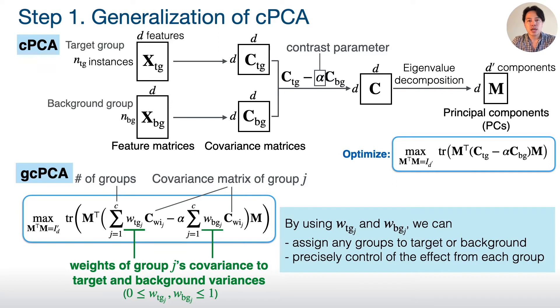By using these weights, any groups can be target or background. Also, we can precisely control how much each group's variance invests on the principal components.